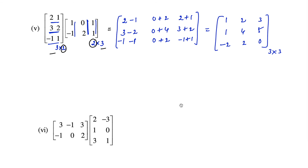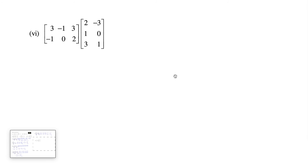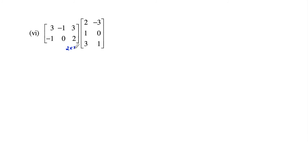Now let's see the sixth one. The first matrix has 2 rows and 3 columns, and the second matrix has 3 rows and 2 columns. The number of columns in the first matrix equals the number of rows in the second matrix, so multiplication is possible and the order of the product matrix is 2 by 2, giving us 4 elements.